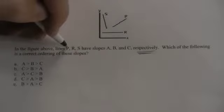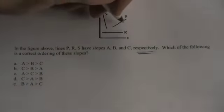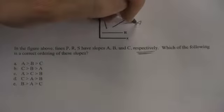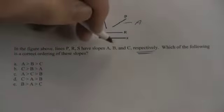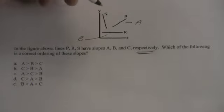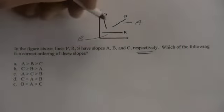So line P has a slope of A. It might help to just put that right into the graph. Line R has a slope of B, and line S has a slope of C.